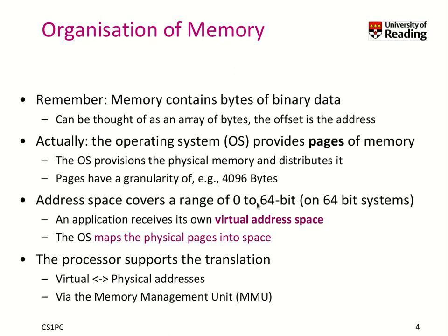So then we have this address space, which is basically 64-bit on our 64-bit machines. That is also the difference from a 32-bit machine, where you can address only about 4 gigabytes of main memory with a couple of tricks. With 64-bit memory, you basically have an unlimited amount of physical memory that can be addressed. Each application receives its own so-called virtual address space. The operating system maps the physical pages provided by the hardware into this virtual space, and the processor supports this translation between virtual and physical addresses using the memory management unit, or MMU.